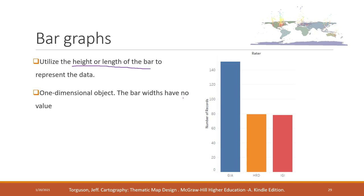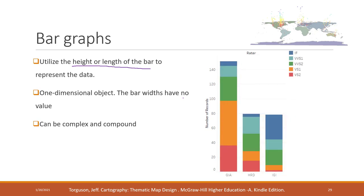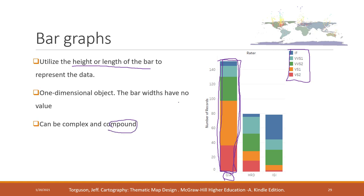Bar charts can be complex where we have multiple variables, and can be compound. Compound means that within each bar there are multiple portions. In this case, clarity is shown in different portions using different colors of the bar, and together they indicate the number of records rated by each agency. That's the compound bar graph.